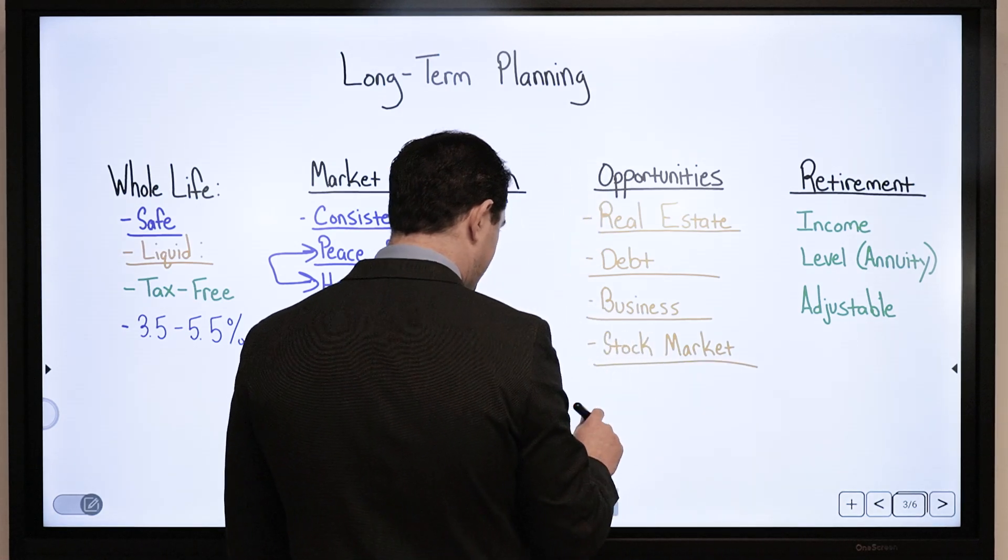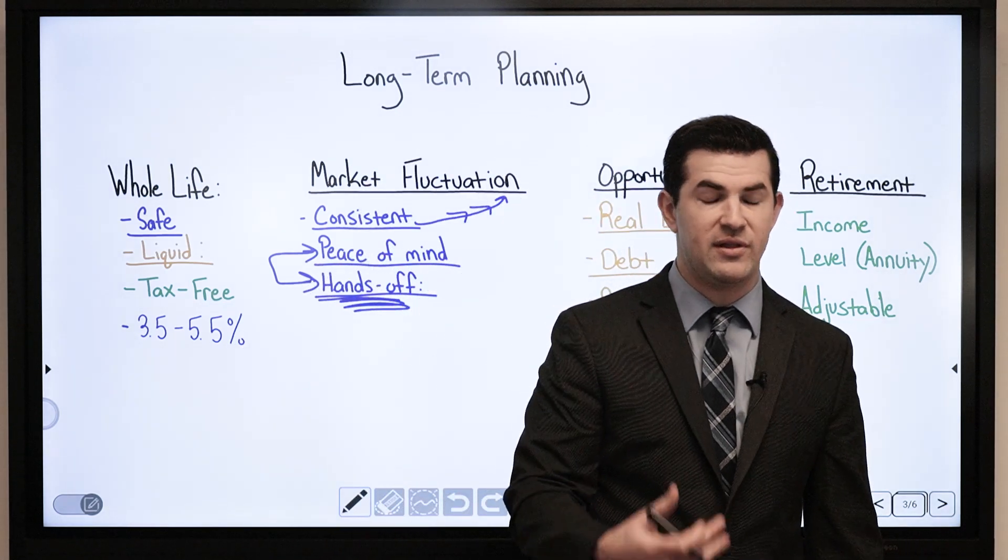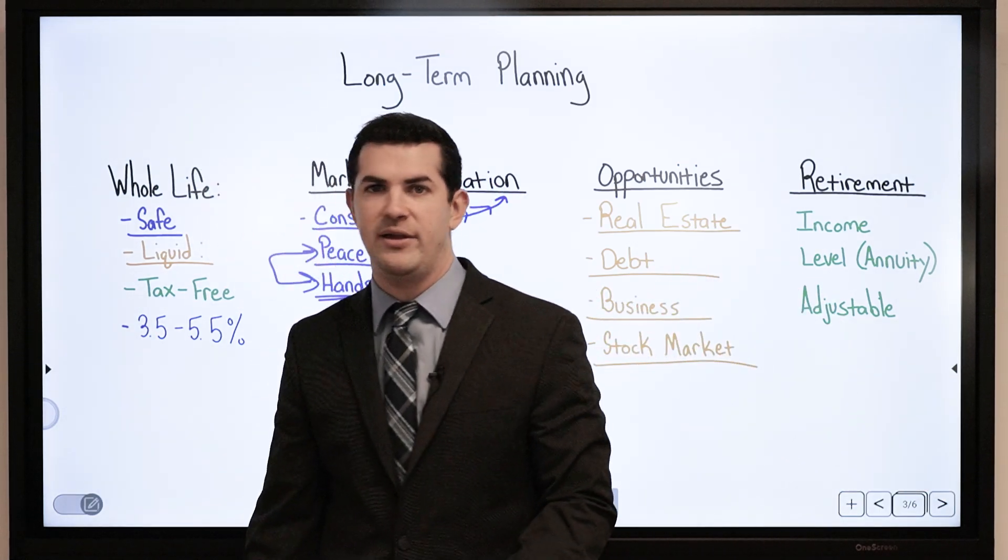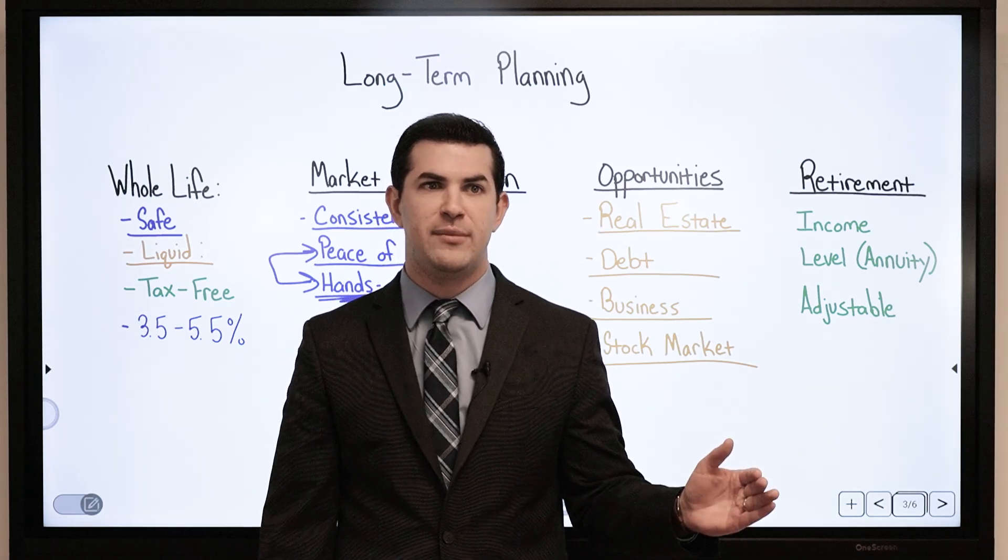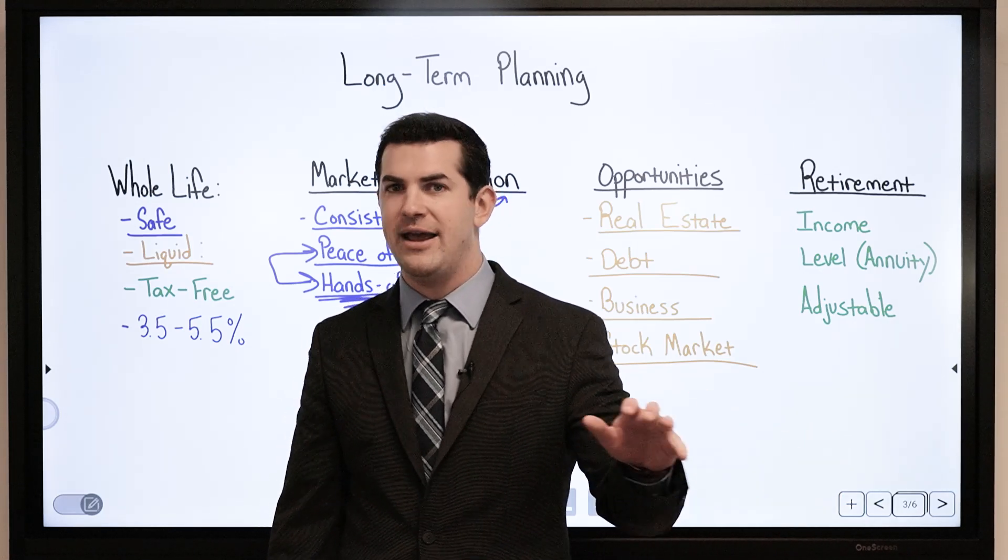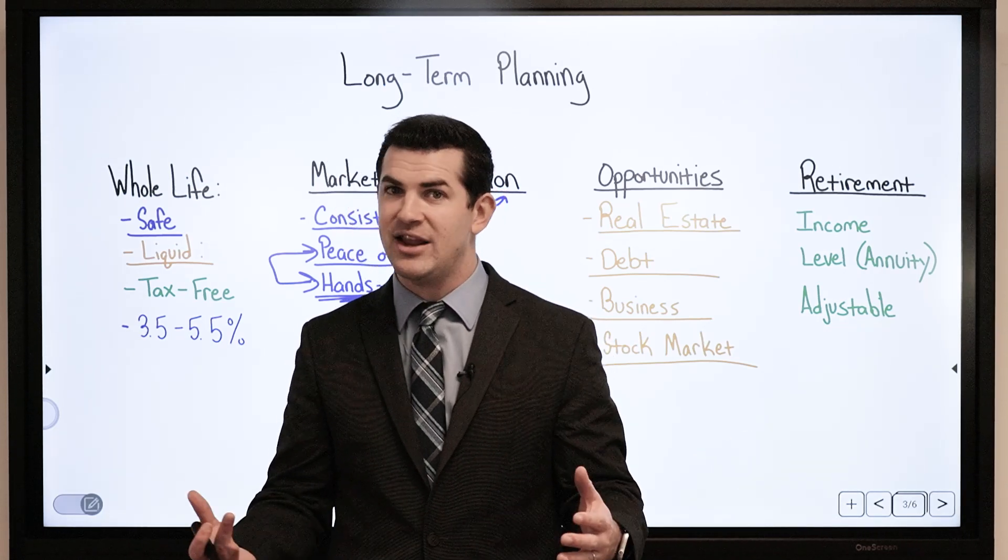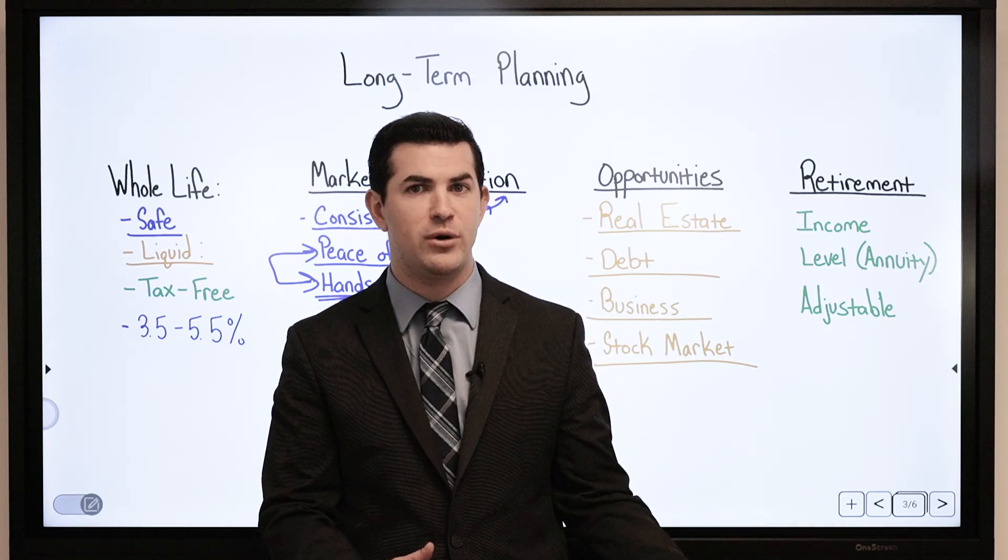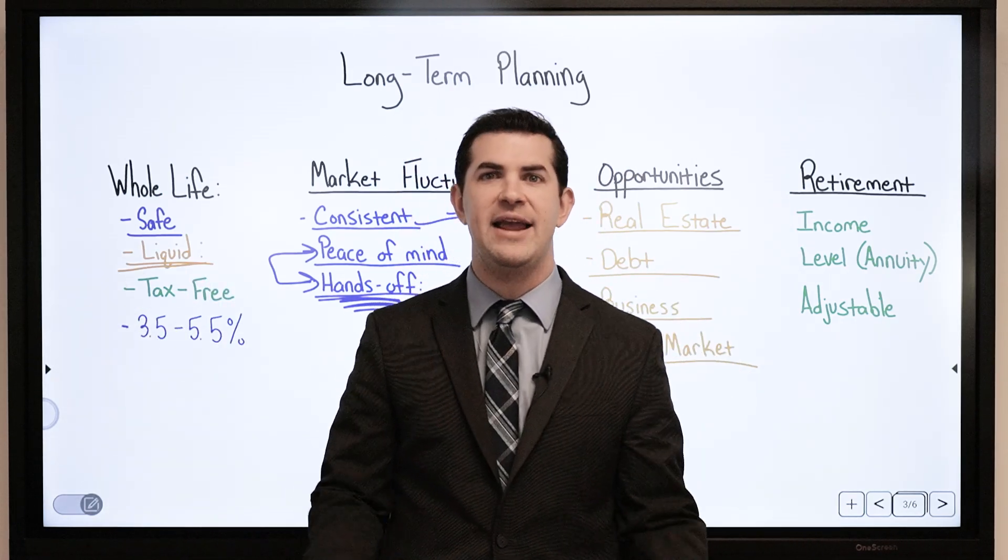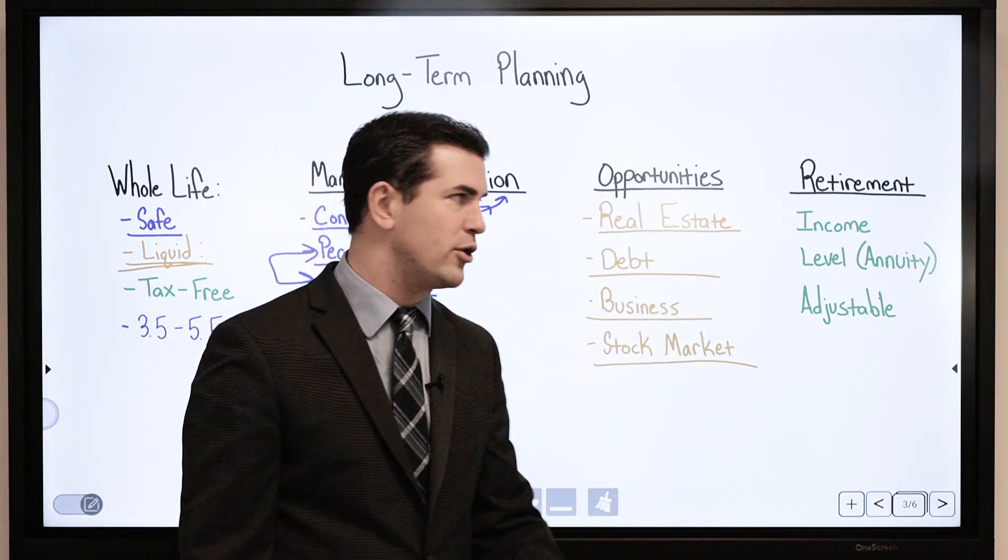When March of 2020 came with the COVID crisis, what happened to the stock market? Came down quickly. People had reached out that had large amounts of money in their policy and said, what is the maximum loan? I want to take a huge loan out and take advantage of the market right now. They viewed it as an opportunity to borrow from their policy. It's extremely liquid, so they could get it quickly. Some did quite well, especially with how fast the market rebounded.